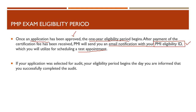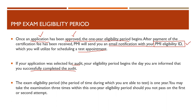If your application was selected for audit — remember the first step was to fill out the PMP application form — once it is approved you get the one-year eligibility period. But since PMI conducts random audits of application forms, it is possible that your application is selected for an audit. In that case, your eligibility period will begin on the day you are informed that you have successfully completed the audit. The time taken to complete the audit process is not included in the one-year eligibility period. You may take the examination three times within this one-year eligibility period.